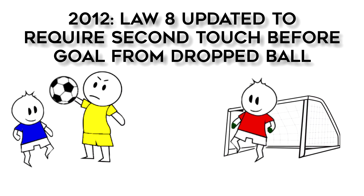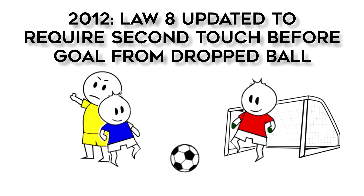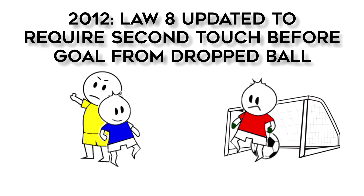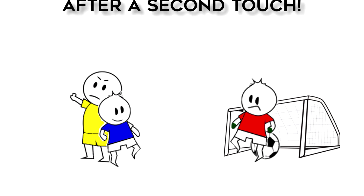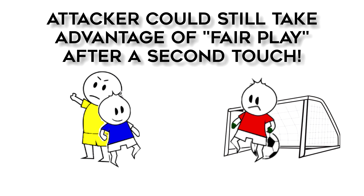Several years ago, IFAB tweaked Law 8 to state that a player could only score directly from a drop ball after the ball was touched a second time. This was supposed to keep players from using fair play as a ruse to kick the ball over the goalkeeper's head and directly into the goal from a drop ball. But somebody figured out that you could just take a second touch and do it anyway, so this is no longer the case.